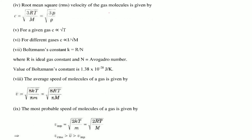The root mean square (RMS) velocity of gas molecules is given by C = √(3RT/M). The RMS speed C is directly proportional to √T and inversely proportional to √M. The Boltzmann constant k is given by k = R/N (ideal gas constant divided by Avogadro number), with value 1.38 × 10⁻²³. The average speed of molecules is V̄ = √(8kT/πM) or equivalently √(8RT/πM).